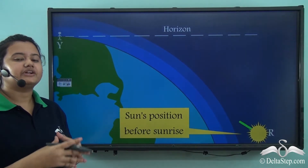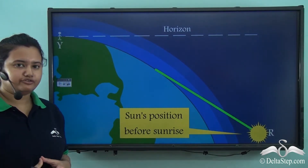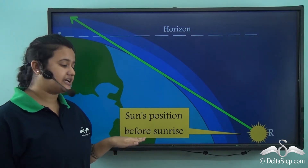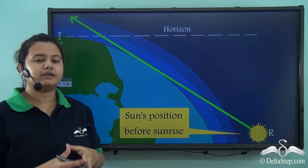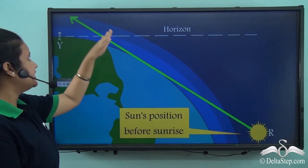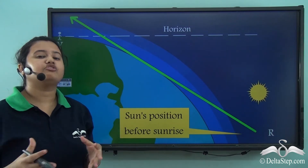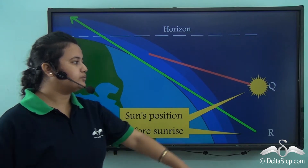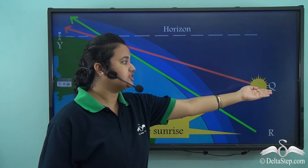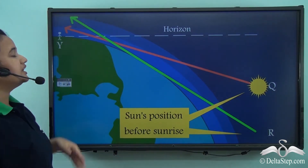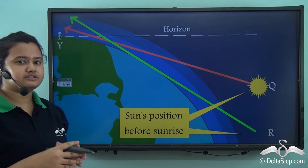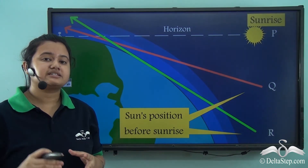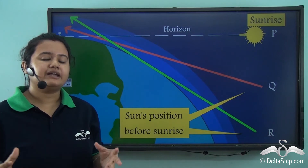Now imagine the same observer is standing at position Y on the earth's surface. The sun is at position R, which is far below the horizon — it is the position of the sun before sunrise. So the observer will not be able to see the sun. The sun rays strike the thin upper layers of atmosphere, so the scattering of light is less and the sky is very partially lit up. Now suppose the sun shifts upwards to position Q. Here, the sun rays reach the layers of atmosphere just above the earth's surface, and the scattering of light is more compared to the first case, and therefore the sky is lit up not brightly but partially.